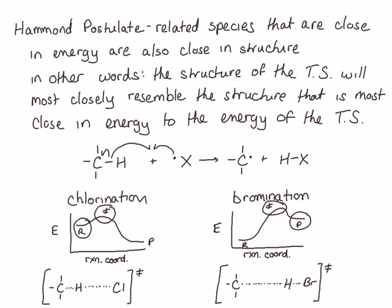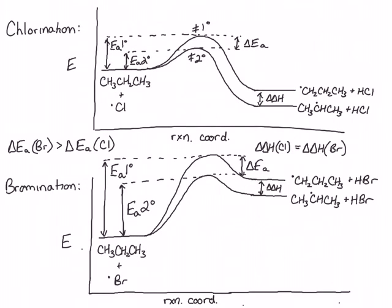Now that we understand the Hammond postulate, let's go back and look at our reaction coordinate diagrams for the complete propagation step. In chlorination, which is an exothermic process, the energy of the transition state is closer in energy to the reactants. Because the reactants have the same energy for the primary and secondary pathways, the transition states will be very close in energy. For bromination, the transition states most closely resemble the products. The products differ in energy for the primary and secondary pathways, meaning there will be a very large difference in the energies of the transition states — leading to a much larger difference in activation energy for the bromination reaction and a much more selective reaction.